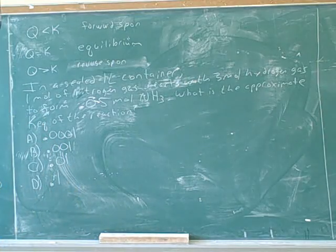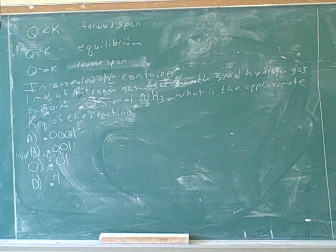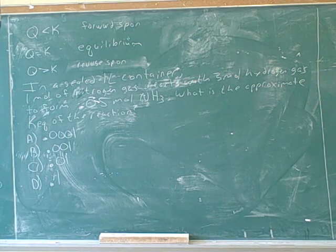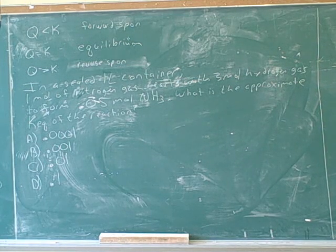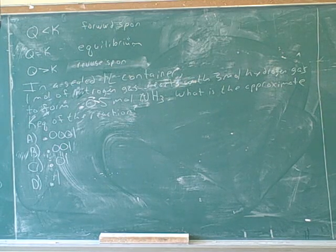Let's try this problem. In a sealed one-liter container, one mole of nitrogen gas reacts with three moles of hydrogen gas to form 0.05 moles of ammonia. What's the approximate equilibrium constant K for the reaction?